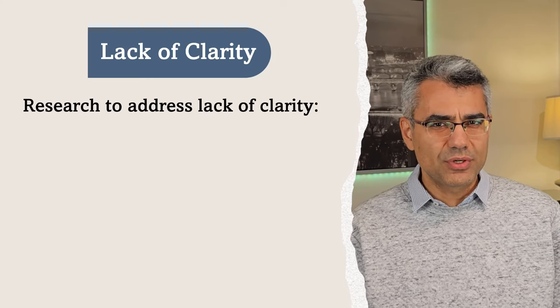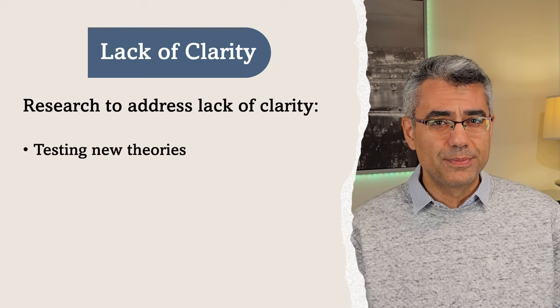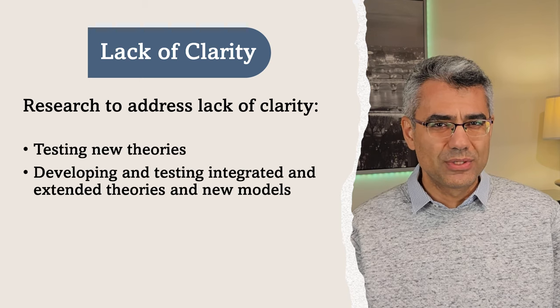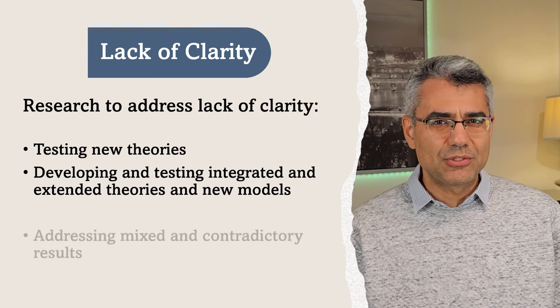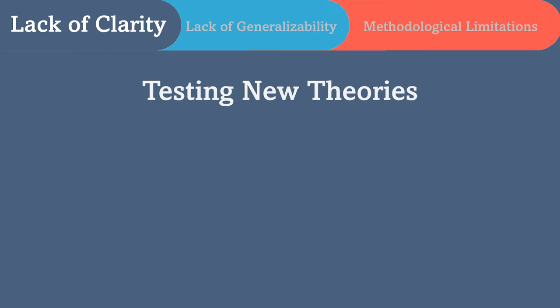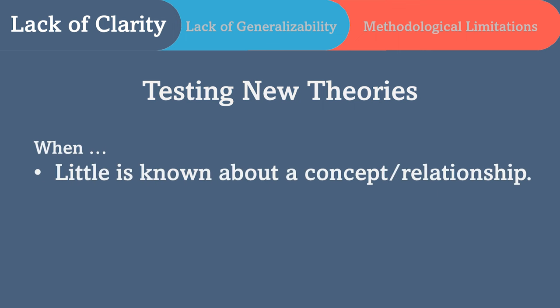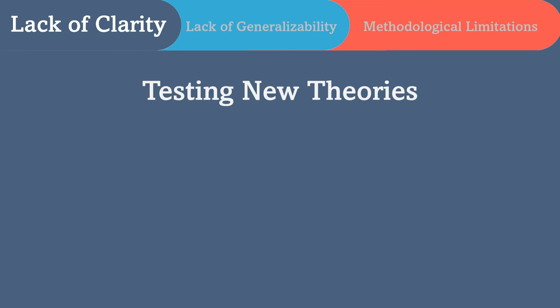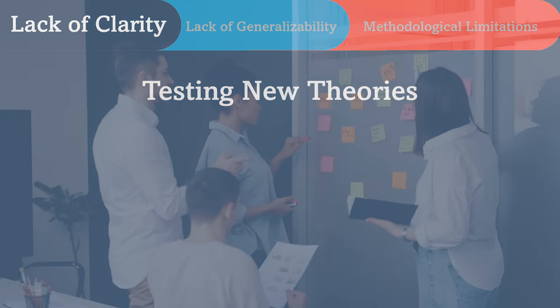The three main forms of research to address lack of clarity could be testing new theories, developing and testing integrated and extended theories and new models, as well as addressing mixed and contradictory results. The first form is testing new theories. One of the most common research gaps is where little is known about a concept or relationship — in other words, there is a lack of empirical evidence to answer a research question. For example, you may conduct an empirical study to test a theory that has not been tested much.